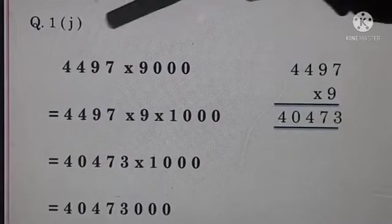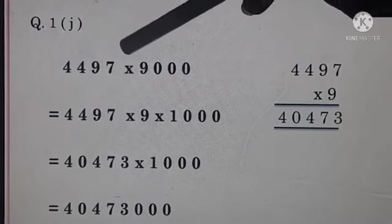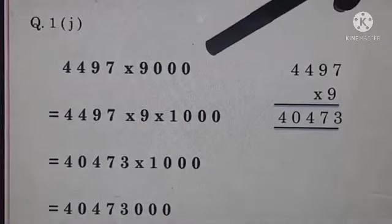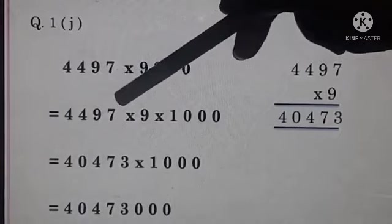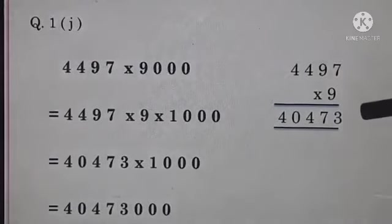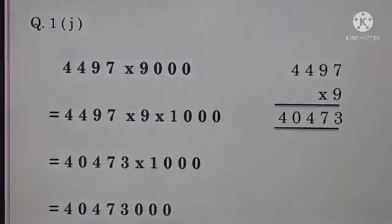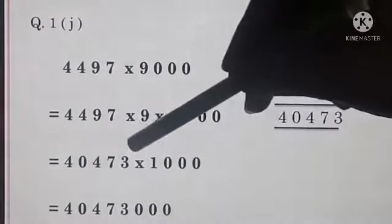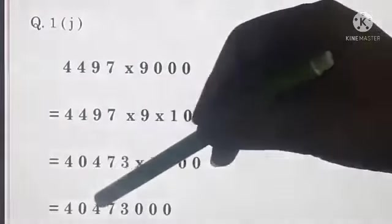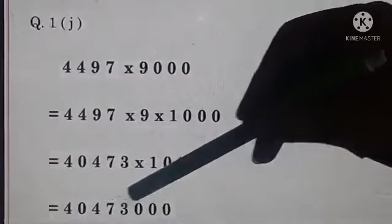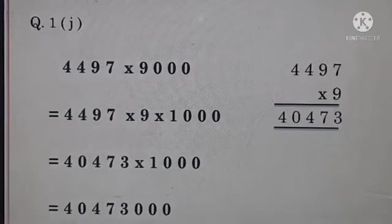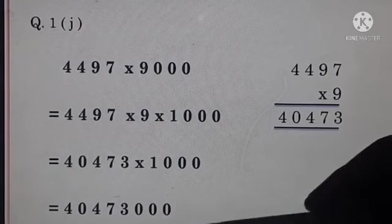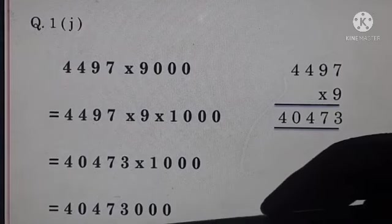And here is your J part: 4,497 multiply 9,000. Now break 9,000 into 9 times 1000. It means 4,497 multiply 9 times 1000. After multiplication 40,473. 40,473 multiply by 1000, so put three zeros to the right side. So our answer is 40,473,000.